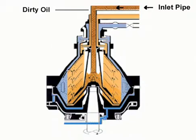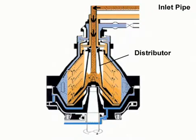Dirty oil is fed into the bowl through the inlet pipe and is pumped via the distributor towards the periphery of the bowl.